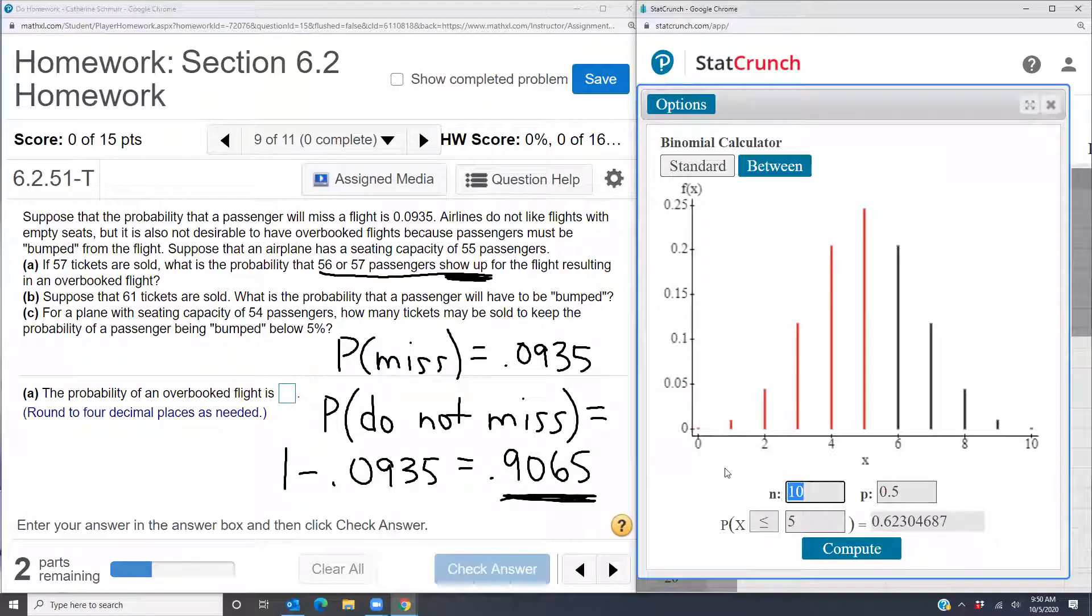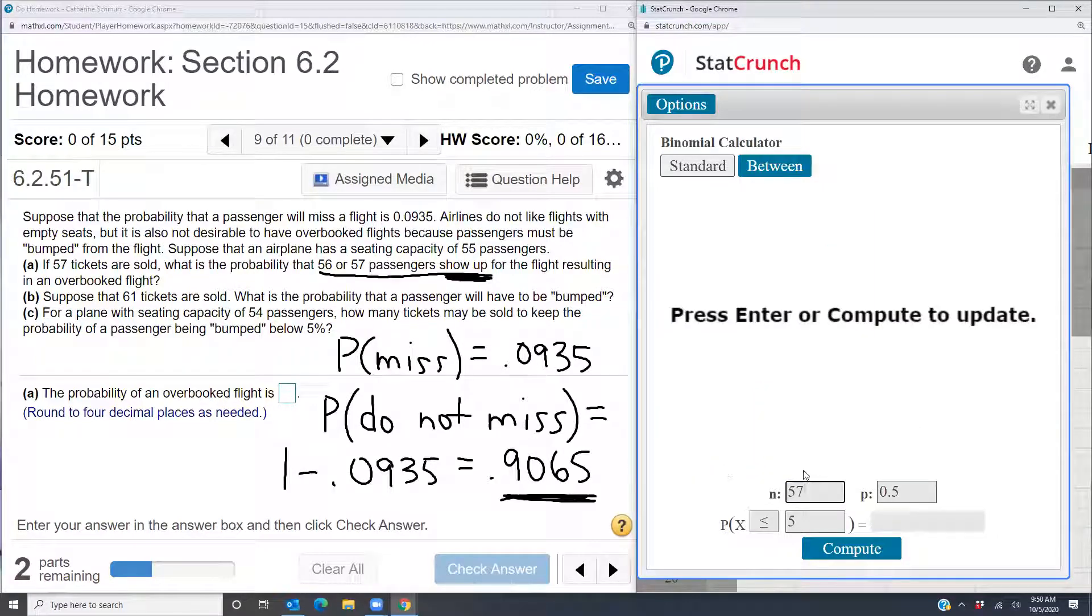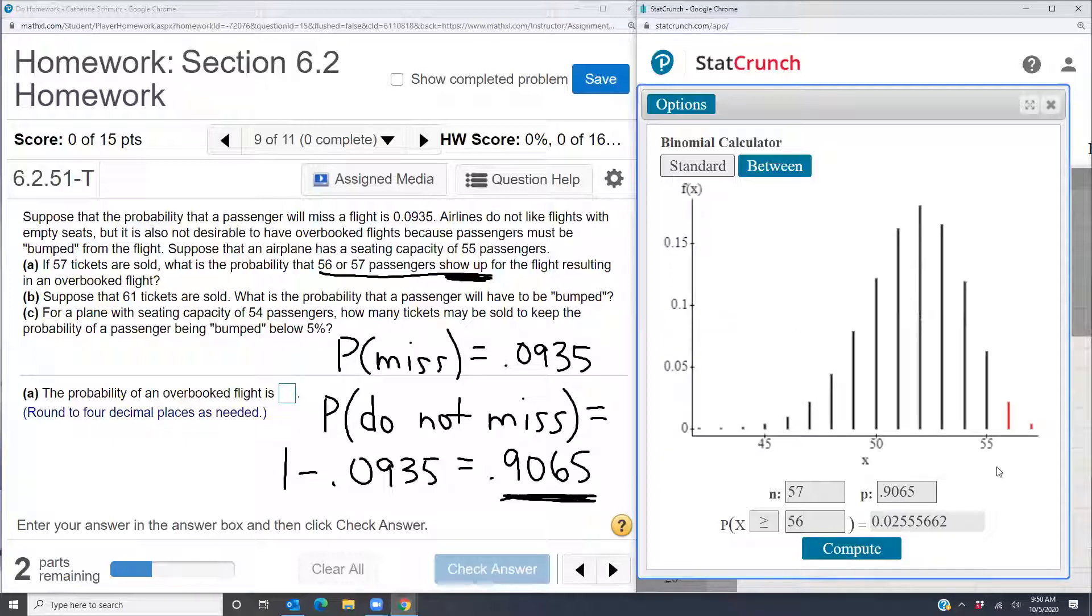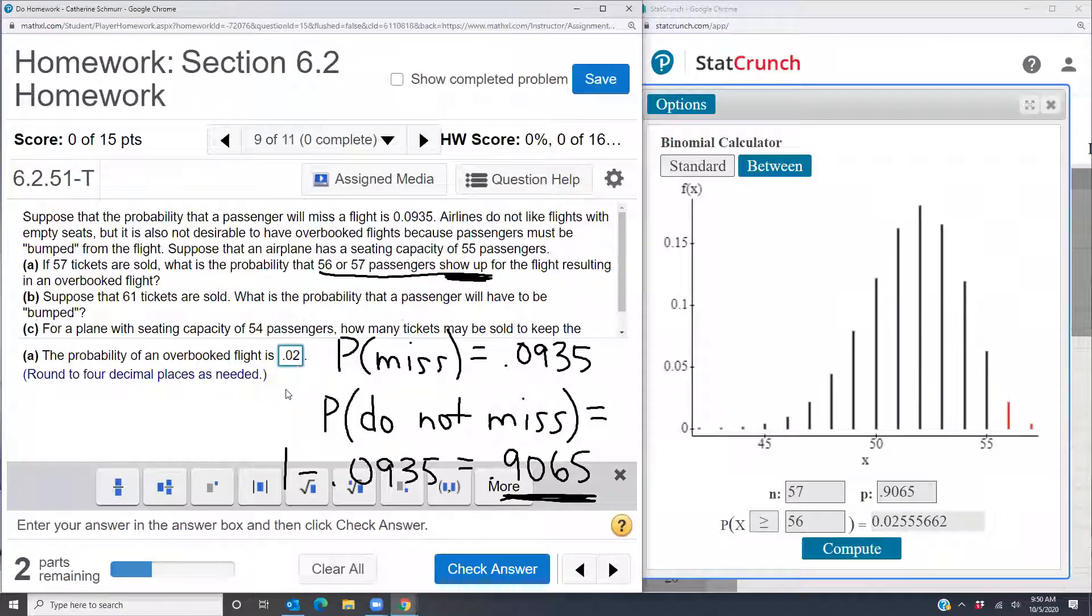And my n is going to be the number of tickets sold. So in part A, there were 57 tickets sold. And I want the probability that 56 or 57 passengers show up. So that's going to translate to x is greater than or equal to 56. And the probability that an individual passenger shows up is .9065. So my probability that the flight is overbooked is .0256. So they say round to four decimal places, and after four decimal places, the digit after that is five or greater, so I round up. So .0256.